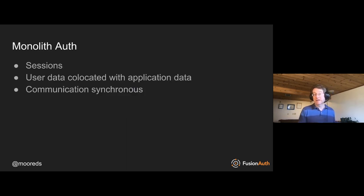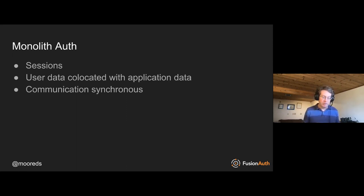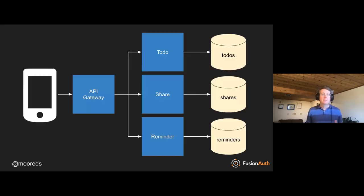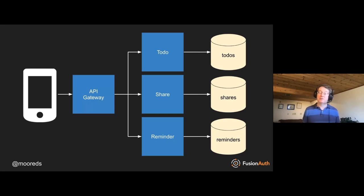Sessions are a really great answer for auth in a monolithic system. Your user data is co-located with your application data, and communication between components is synchronous and reliable. When you're communicating via calling functions in the same JVM or the same runtime, things are pretty good about not failing. If you introduce microservices, you get a set of trade-offs — you get the ability to scale and deploy each of those microservices: the to-do, the share, the reminder functionality independently, and you can even write them in different languages.